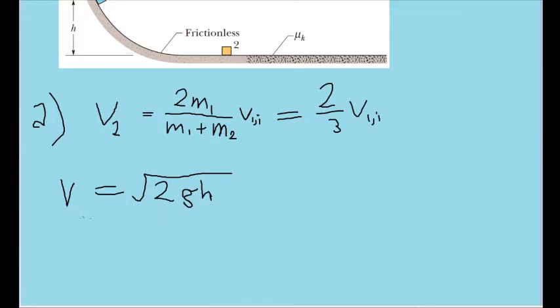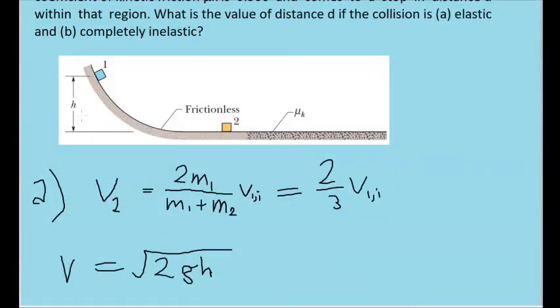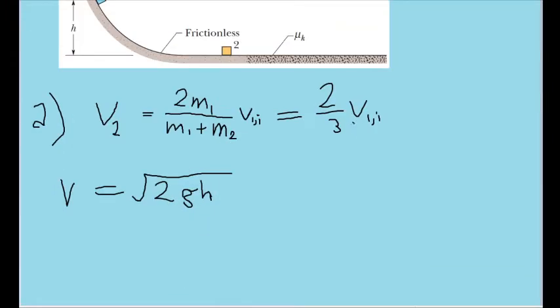We can see that the block's speed shortly before the collision is equal to the square root of 2 times g, the acceleration due to gravity, times h, which is a given value, the height of the ramp. Now we can plug this in for v1i here.